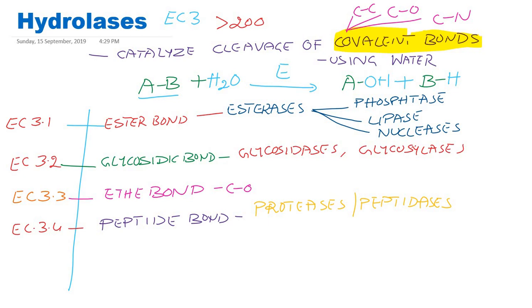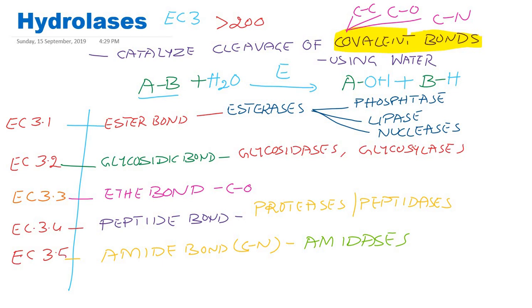These Hydrolases can break even amide bonds — other than peptide bonds. A peptide bond is also partially an amide bond (C-N), but it has a C double bond O and H. If it is just C-N other than a peptide bond, we call it an amide bond, and those enzymes are called amidases. They belong to enzyme class 3, subclass 5.